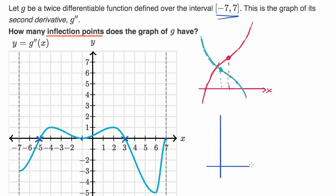Let's imagine that this is the graph of a second derivative, f prime prime. The first derivative might look like this: over here we have a negative slope, negative slope, getting closer and closer, and then right over here all of a sudden the slope becomes positive and increasing. So that would be f prime of x.